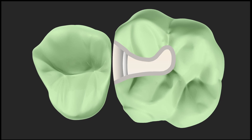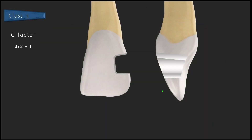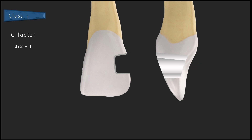In a class 3 tooth preparation, the gingival wall, axial wall, and incisal wall will be bonded, while the distal wall, labial wall, and lingual wall will be free. So the C factor is 3 divided by 3, equal to 1. Whenever the C factor is 1 or less than 1, we do not need to go for incremental buildup — we can go for bulk buildup. A class 3 tooth preparation, even if done with a single bulk increment, nothing bad is going to happen.